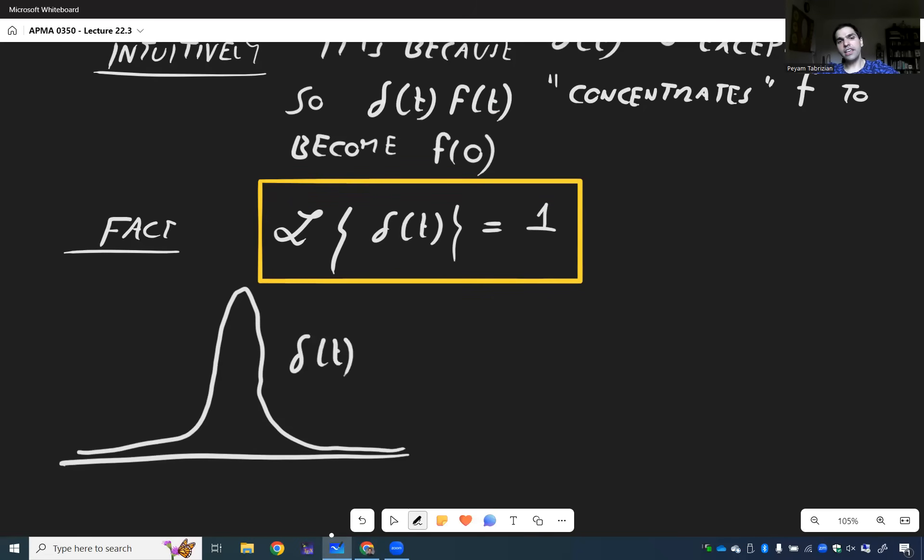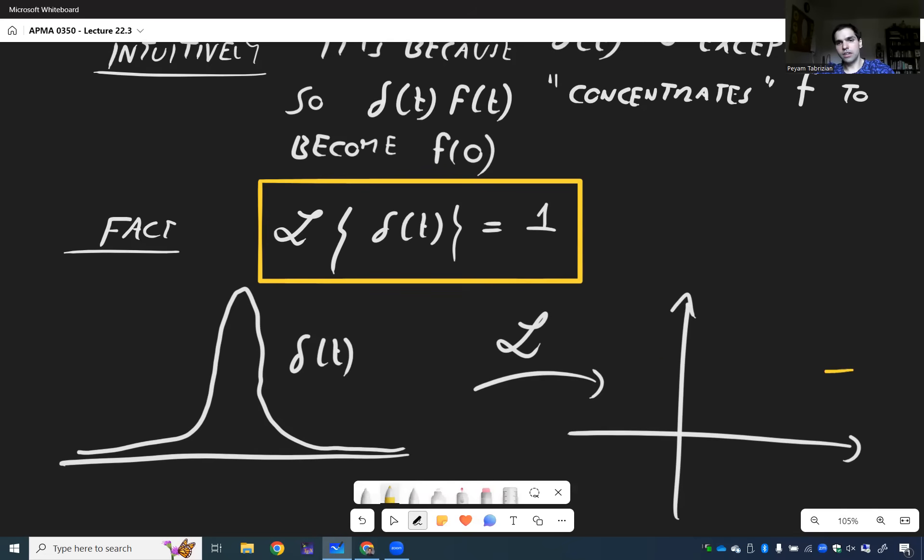we never figured out which function has Laplace transform one. So once again, if you take the Dirac delta, you take L, then turns out you will get the function one, at least for positive s. And why is that true?